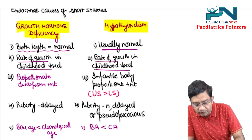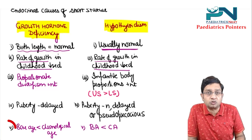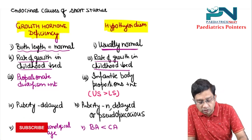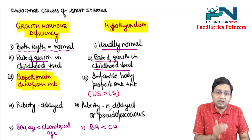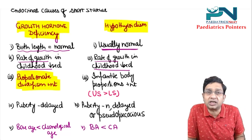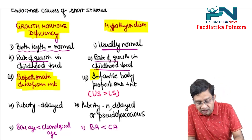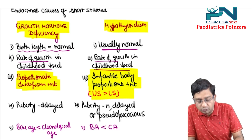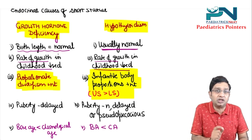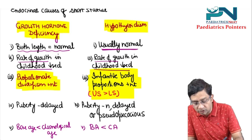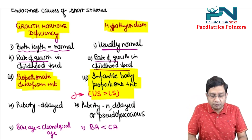The rate of growth in childhood is decreased in both GH deficiency and hypothyroidism. The most important differentiating point is that in GH deficiency there is proportionate dwarfism — the upper segment to lower segment ratio is according to age. In hypothyroidism, infantile body proportions are seen, meaning disproportionate dwarfism where the upper segment is greater than the lower segment.